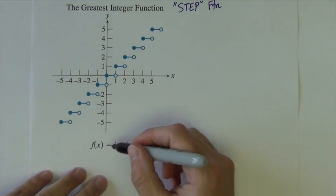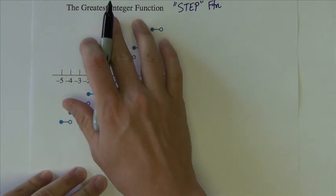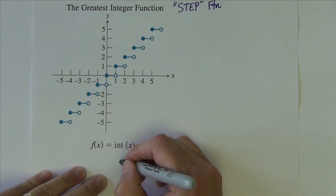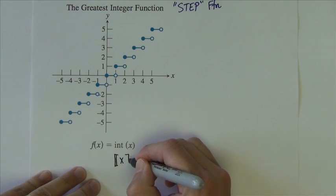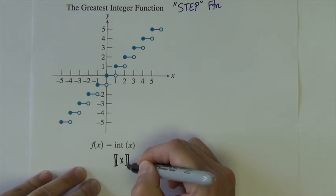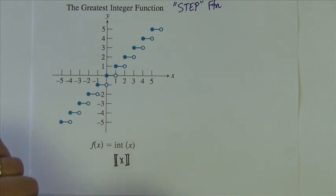The function might look like this, int x. Int stands for the integer, there's an abbreviation there. Sometimes, you see it notated like this. Some texts use notation like this, kind of square brackets, but it's got that double vertical line on each side, so I just want to share that with you as well.